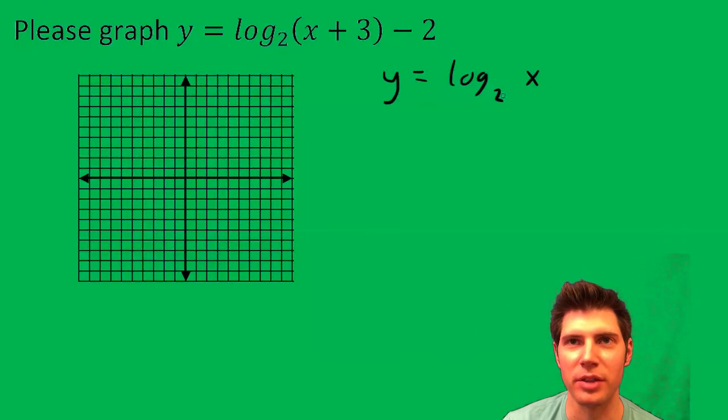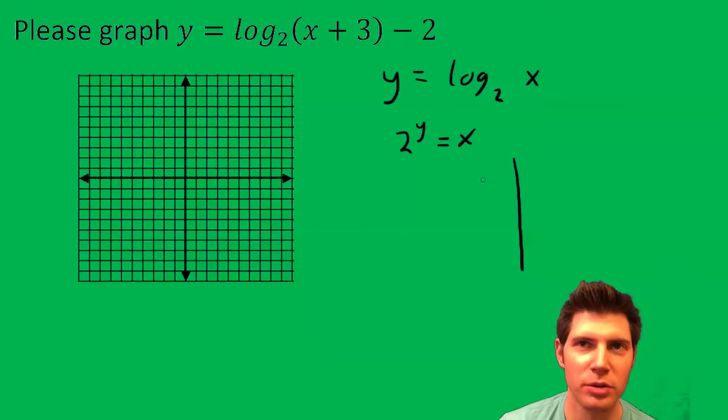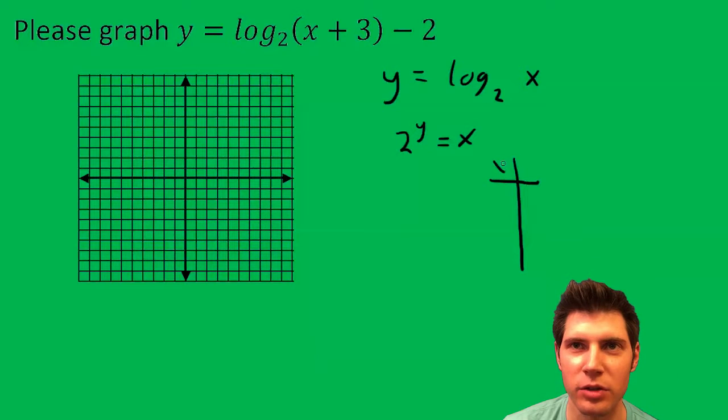So I'm going to rewrite this without the log. So it's going to be 2 to the y equals x. So this I can make a t table for x,